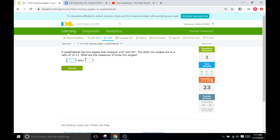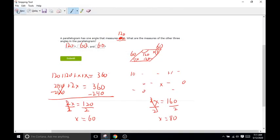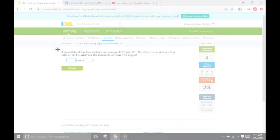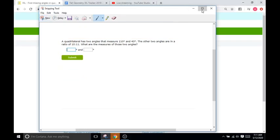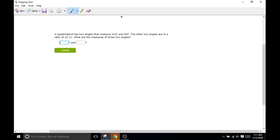Next, the quadrilateral has two angles that measure 110 and 40. The other two angles are in a ratio of 10 to 11. What is the measure of those two angles? So it doesn't take that long for you to get the problems that throw some ratios at you. Do not worry about the ratios. I'll explain kind of an easy way to think about it.